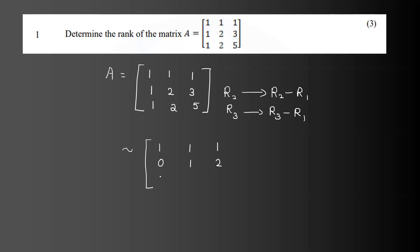R3 implies R3 minus R1. One minus one is zero. Two minus one is one. Five minus one is four. Now we have zeros in the first column for rows 2 and 3.